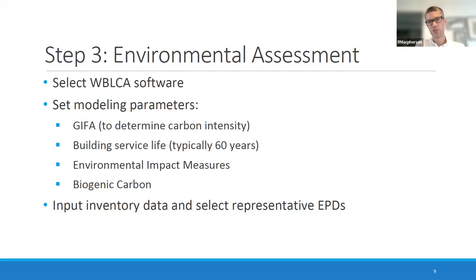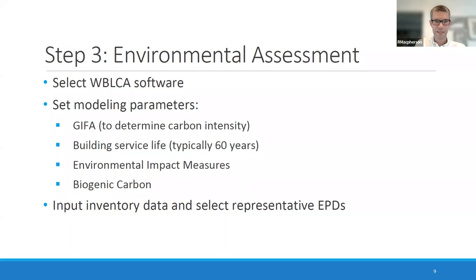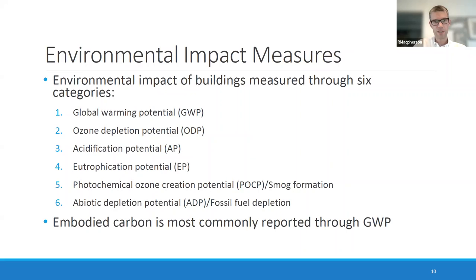There are a whole host of modeling parameters to choose from. Key ones include: what is the building service life — typically we say 60 years; what are the environmental impact measures; how are we going to treat biogenic carbon; and what is the gross internal floor space. It might seem obvious that gross floor area is straightforward to calculate, but there are multiple definitions of gross floor space. In terms of environmental impact measures, there are many we can model. Six are more generally looked at, though the vast majority of analysis just looks at number one: global warming potential. It is possible to get information on all six if needed.